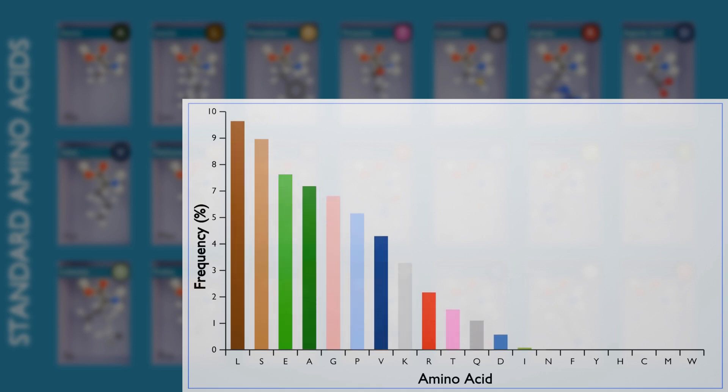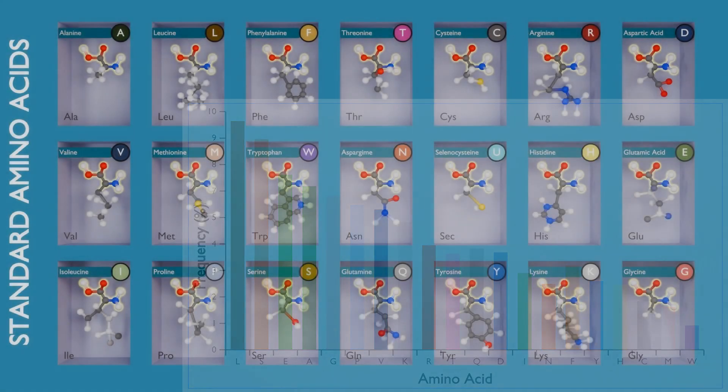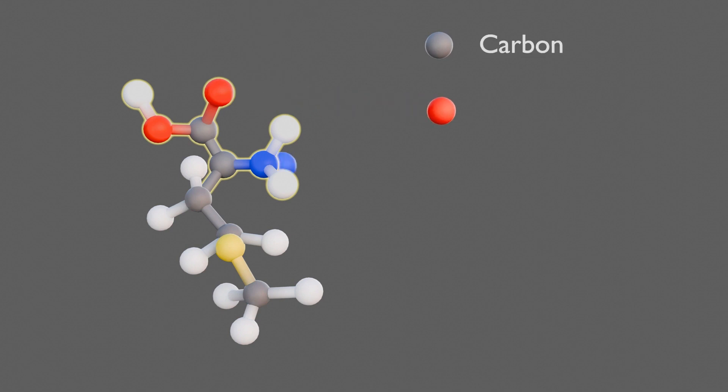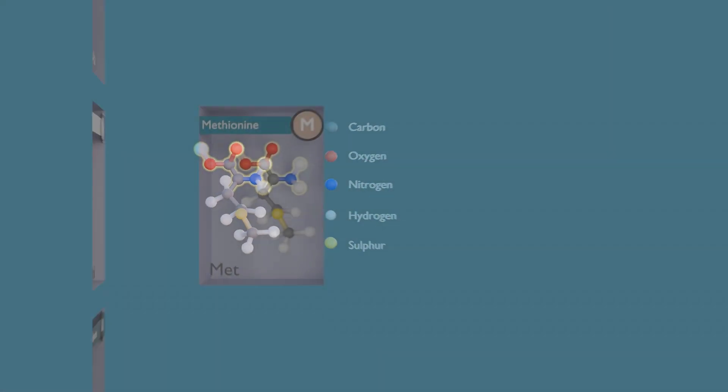Some amino acids appear more frequently than others. Here is a graph representation of the percentage of each amino acid. Amino acids are made of carbon, oxygen, nitrogen, and hydrogen atoms, and some contain sulfur atoms.